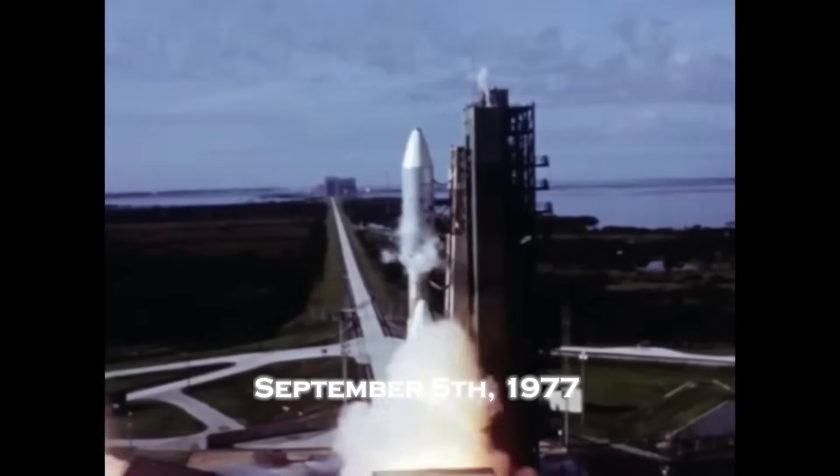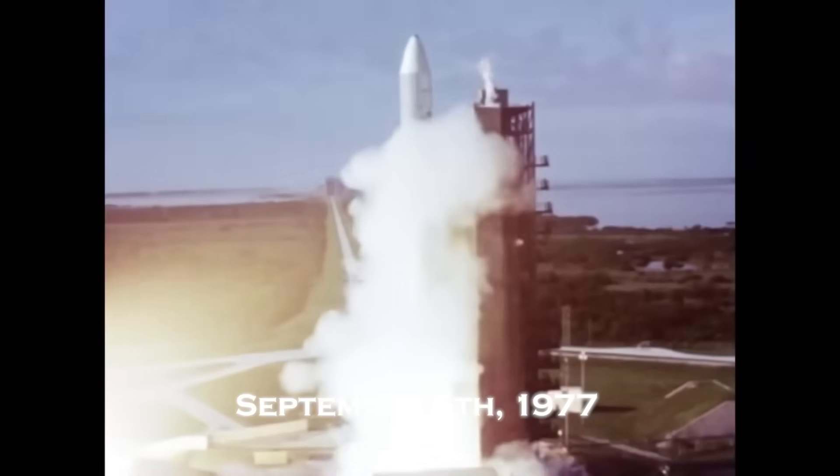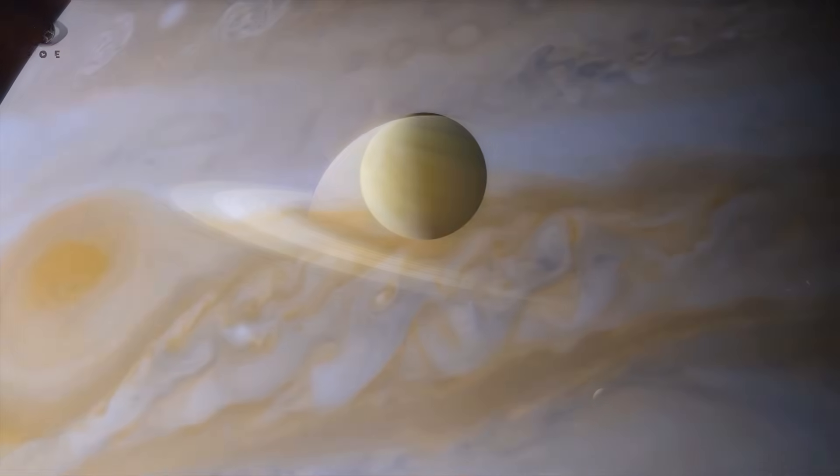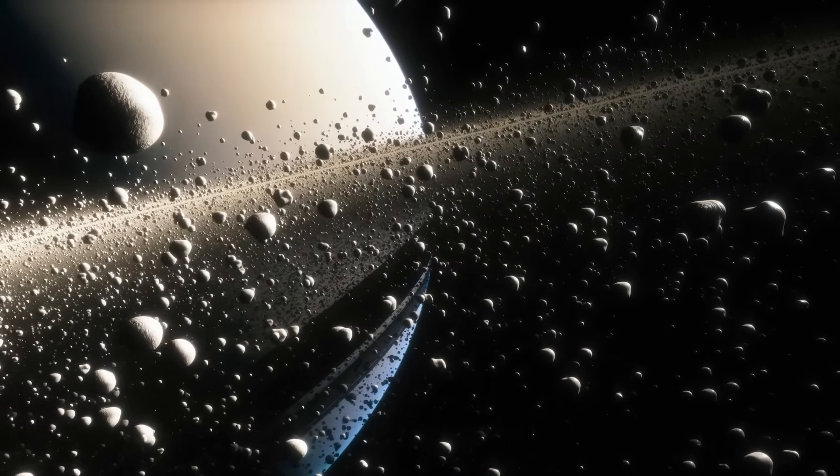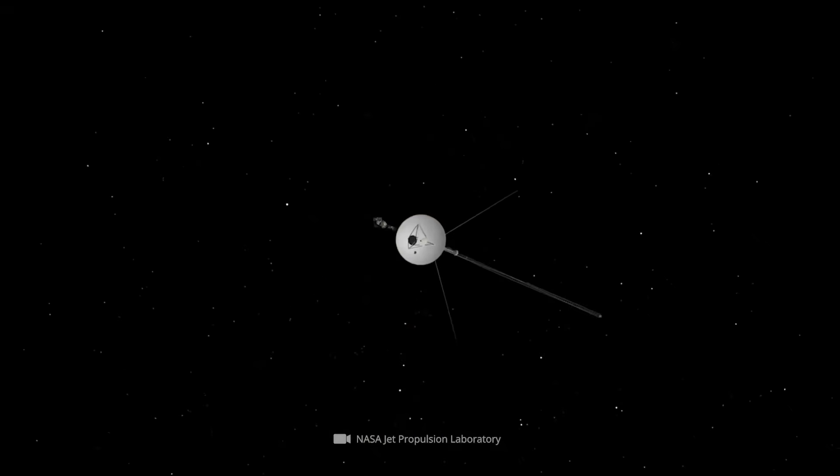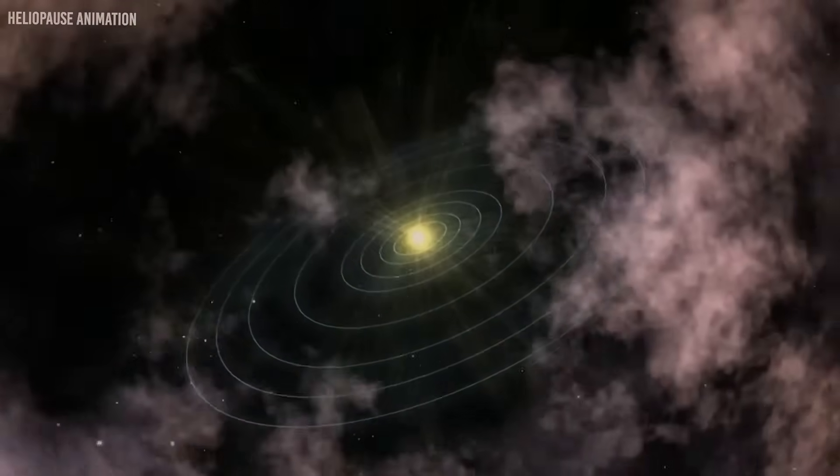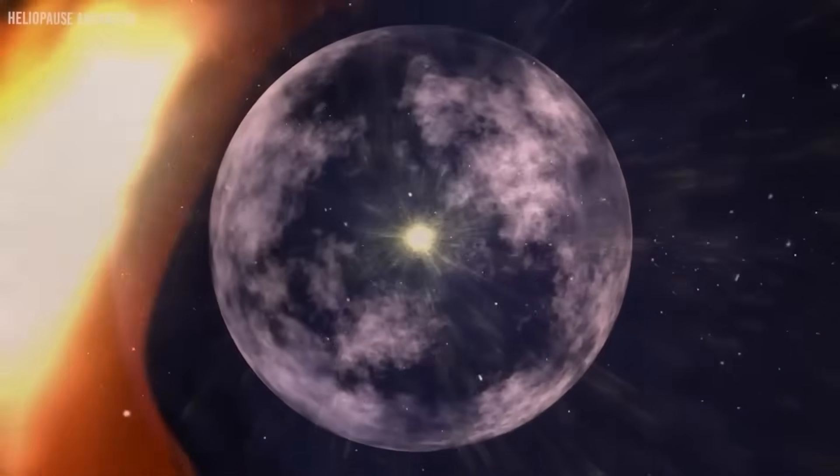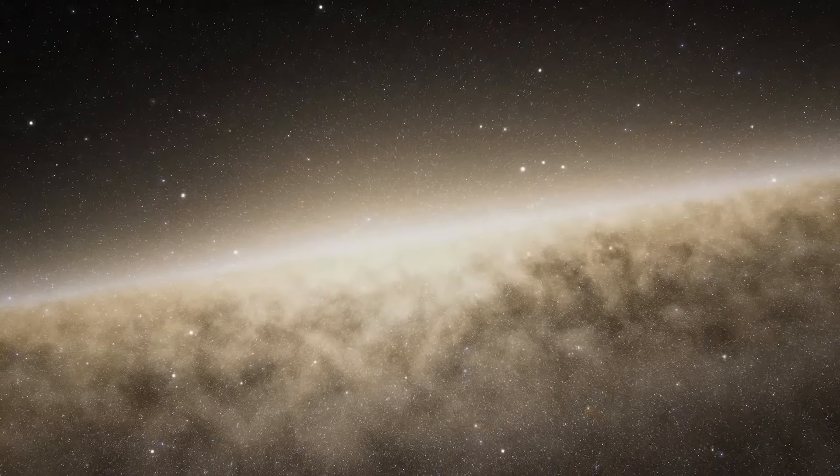Voyager 1's journey began on September 5, 1977, as part of NASA's ambitious plan to explore the outer planets. Initially, its mission was modest: collect data from Jupiter and Saturn, send back a few high-resolution images, and then fade into history. But Voyager wasn't built to die quietly. Thanks to a rare planetary alignment, it used gravitational slingshots to boost its trajectory into the unknown, becoming the first man-made object to enter interstellar space.